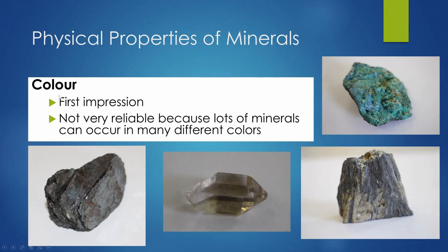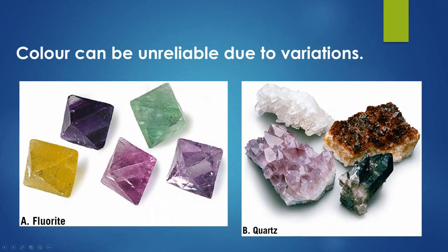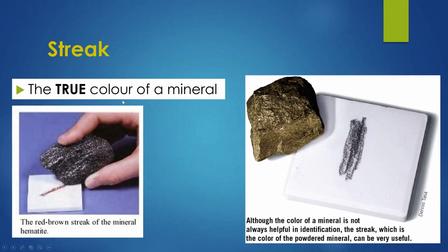Quartz comes in lots of different types and colors, all pretty much chemically the same — just with one element here or there that produces the color. Here we can see fluorite in all these different natural colors. Here's smoky quartz, amethyst — which is essentially purple quartz — normal quartz, and black quartz. So the true color of a mineral is determined by its streak.